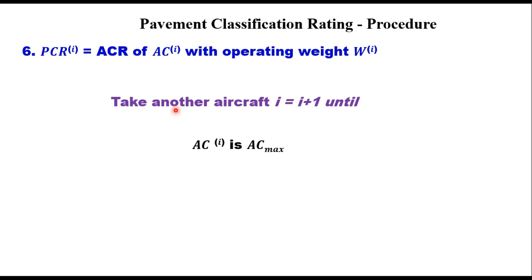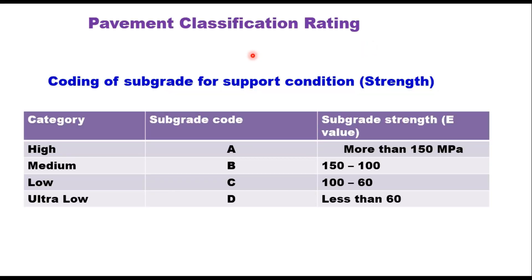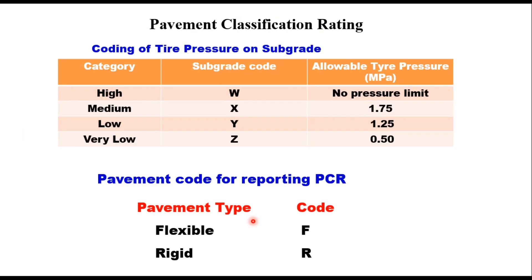Then change to another aircraft (I = I + 1), and PCR is the maximum PCR across all aircraft — that is the Pavement Classification Rating. PCR reporting is done for several parameters. First, coding of subgrade support condition is measured in terms of E value with four categories A, B, C, D depending on subgrade strength. Second, coding of tire pressure: high, medium, low, or very low. The subgrade code is A/B/C/D and the tire pressure code is W, X, Y, or Z, where W means no pressure limit, X is 1.75 MPa, Y is 1.25 MPa, and Z is 0.5 MPa.